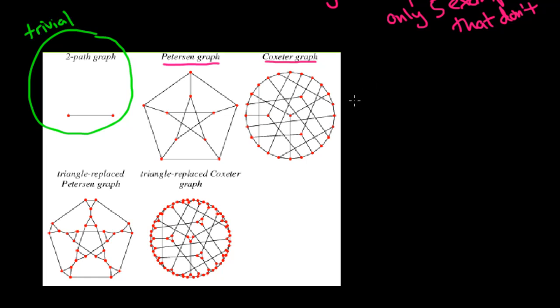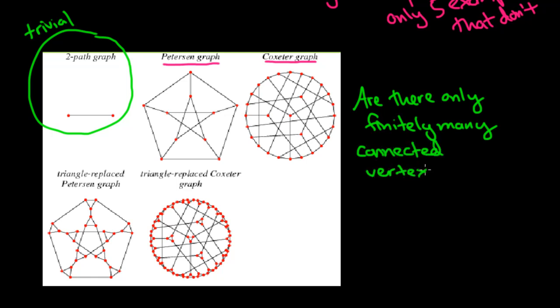So this brings up the question, are there only finitely many connected vertex transitive graphs with no Hamilton cycle.